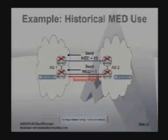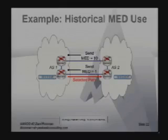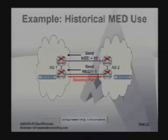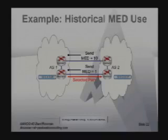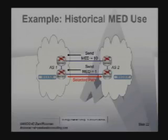Here's the historic use of MED. AS1 and AS2 have multiple connections to each other. Someone in AS1 is trying to communicate with 10.0.0.2. If AS2 sends a MED of 10 in one direction and a MED of 1 in another, AS1 will — all other things being equal — select the path to AS2 with MED of 1, provided his routing policy accepts MEDs and he's willing to do cold potato routing. This is what MED was originally designed for. It turns out this is rarely used, as people prefer hot potato routing because it helps control costs and capacity.